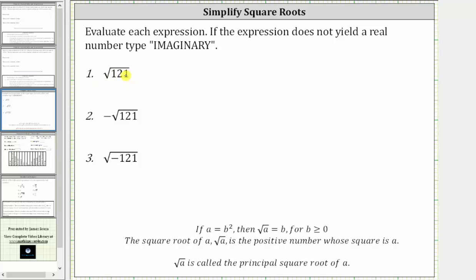Formally, this is the principal square root, which means this simplifies to a value greater than or equal to zero, that if we square it, we get the radicand of 121.